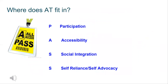After thinking about our classroom environment in terms of physical arrangement, academic mindset, and social expectations, we want to ask: where does AT fit in? This is the Tier 1 process — looking at your overall classroom and what you have available for all students so they can meet your expectations. I've developed a protocol as a speech-language pathologist called the All Access Pass protocol. PASS breaks down into four areas: participation, accessibility, social integration, and self-reliance or self-advocacy.